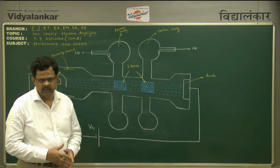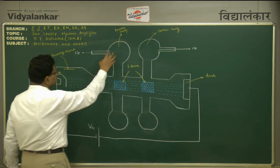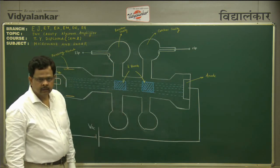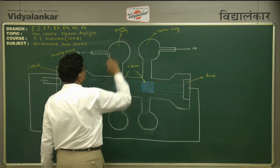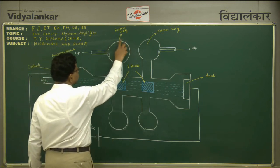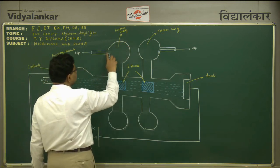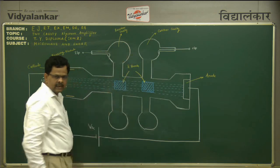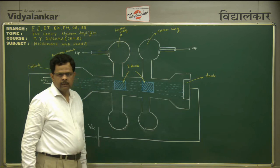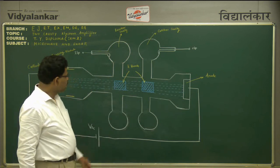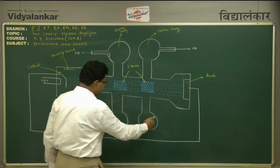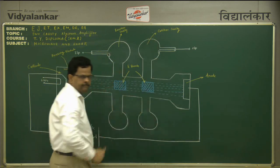Apart from this, on the input side we have a cavity known as buncher cavity. The circular shape behaves like an inductor and the rectangular space behaves like a capacitor. On the output side we have a catcher cavity.